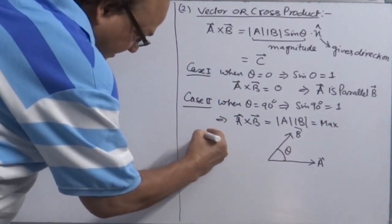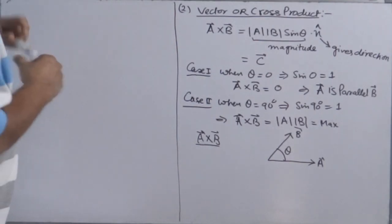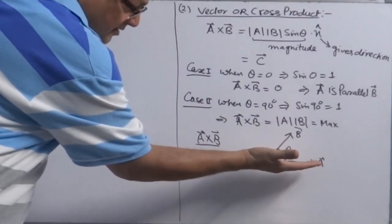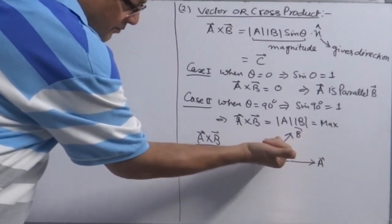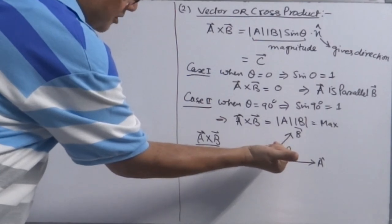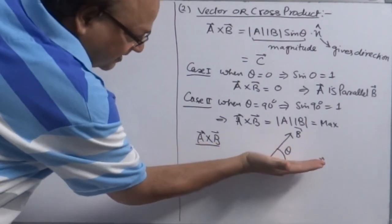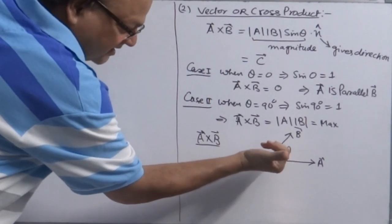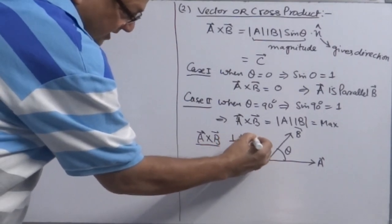Keep your fingers parallel to the first vector in the product. For example, if you want to find A cross B, keep your fingers parallel to vector A, and then start curling your fingers towards vector B. If you can curl your fingers towards vector B, then whatever direction your thumb points — that will be the direction of the resultant product vector C. So for A cross B, the thumb gives the direction of vector C, which is perpendicular to the plane, outward.